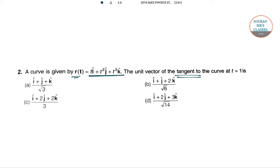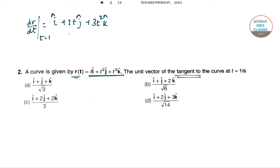We need to find the unit tangent vector. First we find the derivative: dr/dt equals i plus 2t·j plus 3t²·k. At t equal to 1, dr/dt equals i plus 2j plus 3k.